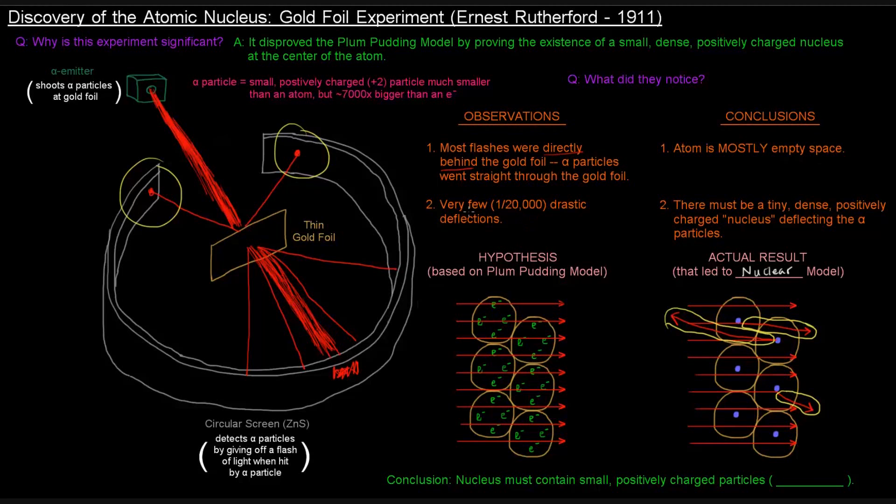So, since there were so few of these drastic deflections, that led to the idea that it must have been pretty small. It's been a tiny, tiny, dense situation in there. And because these alpha particles have a plus two charge, he reasoned that what used to be the positive fluff is not actually positive fluff in the Pudding model. It must be positively charged particles there. And so, he called this little entity at the center of the atom a nucleus. Deflecting the alpha particles.